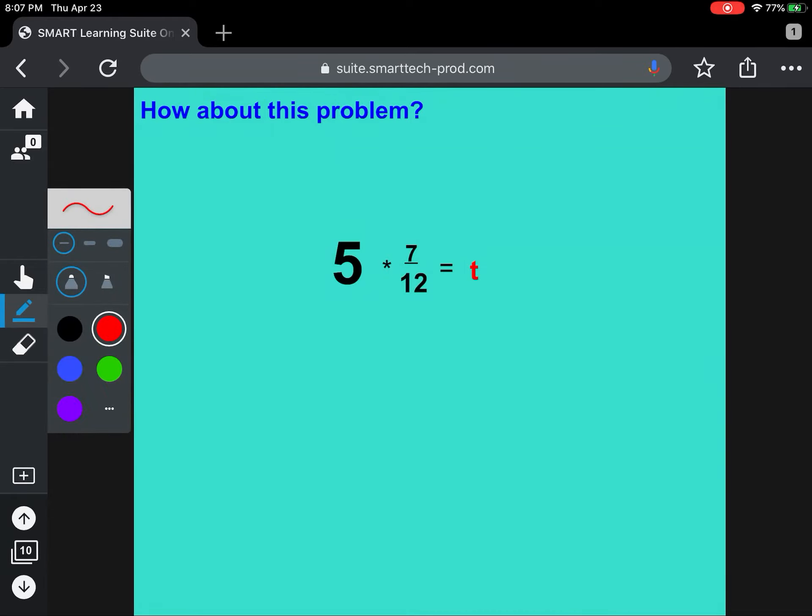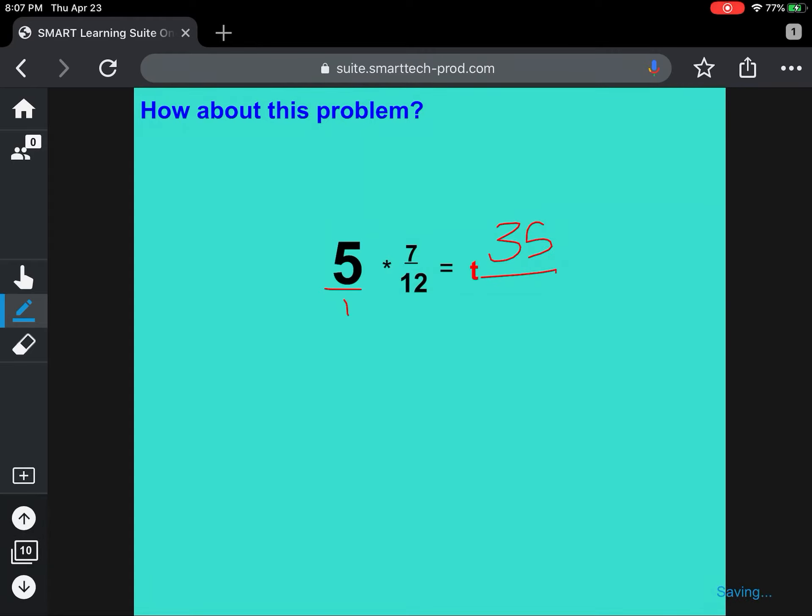For this problem, I would have put my 5 over the 1, multiplied my numerators, so 5 times 7 is 35, multiplied my denominators, 1 times 12 is 12. So again, we have an improper fraction. Then you have to ask yourself, how many times does 12 go into 35?